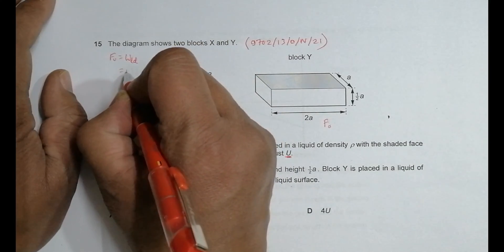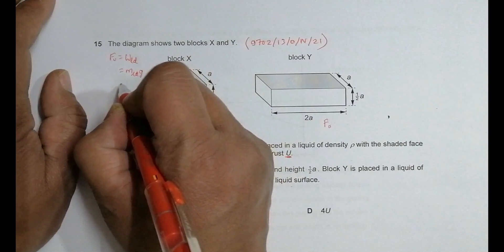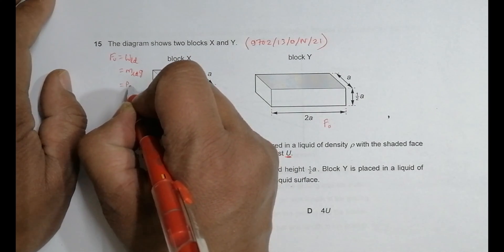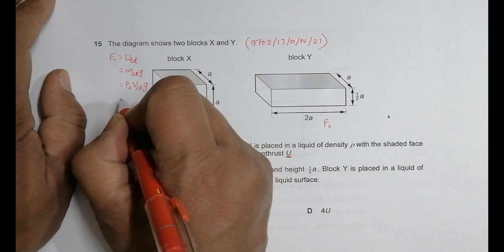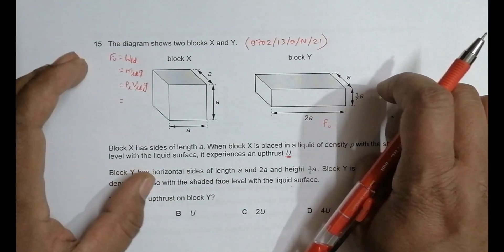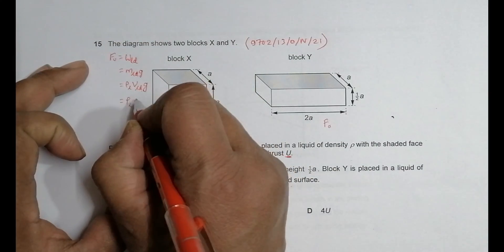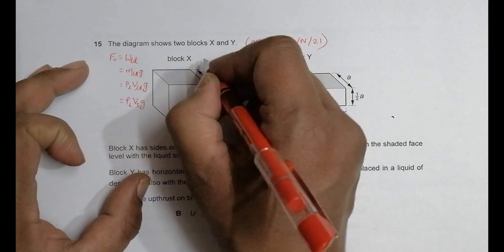liquid displaced times g. Since in both cases they are fully immersed, this equals ρ of liquid times volume of the solid times g, because when fully immersed, volume of solid equals volume of liquid displaced.